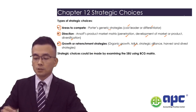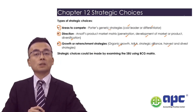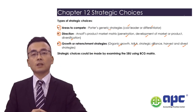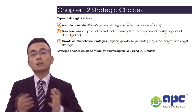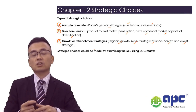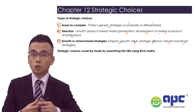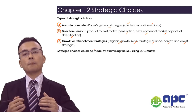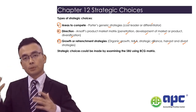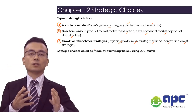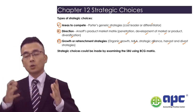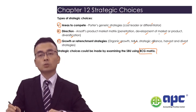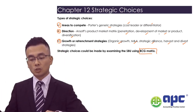With a retrenchment strategy, you can reduce your spending — that's the harvest strategy — or sell your business through a divest strategy. When we talk about strategic choices covering industries, geographical locations, or product lines, we can examine them using the Boston Consulting Group matrix, or the BCG matrix.